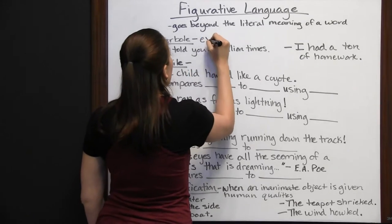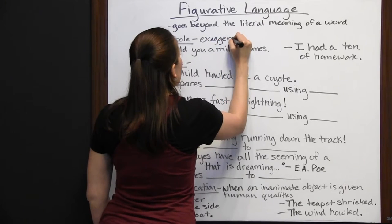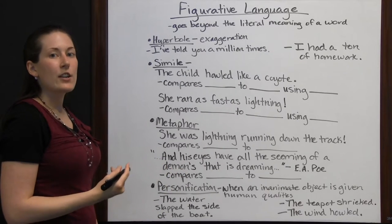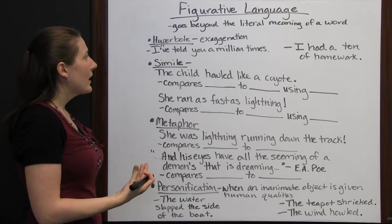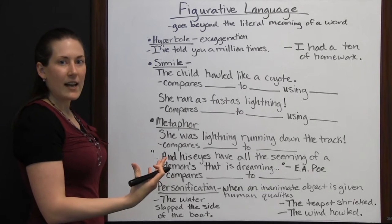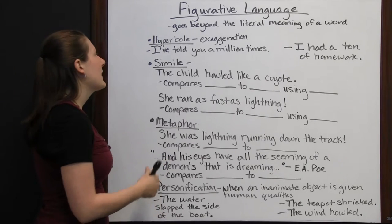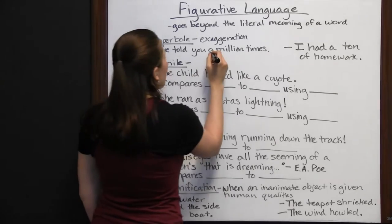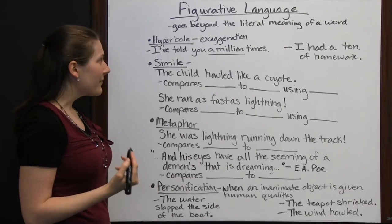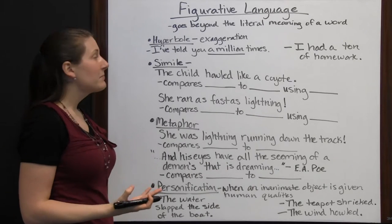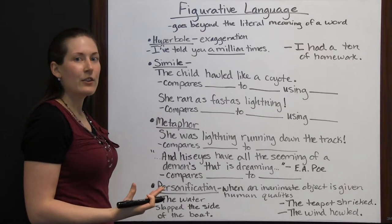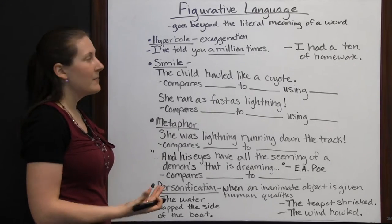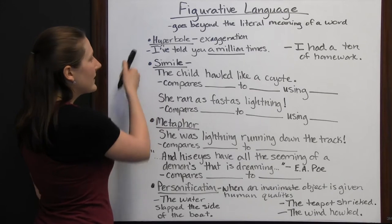Hyperbole is exaggeration. People will say something and you aren't meant to take it literally. You're meant to know it's an exaggeration, but it's there just to emphasize how strongly the author is trying to convey something. For instance, "I've told you a million times." A million times — really? You probably haven't heard whatever your parent or teacher has said a million times. It's an exaggeration; it's hyperbole. It's meant to emphasize that they've already told you this many times before.